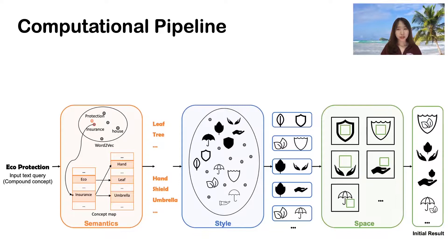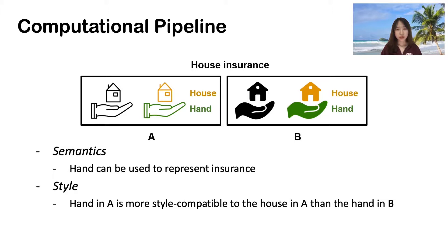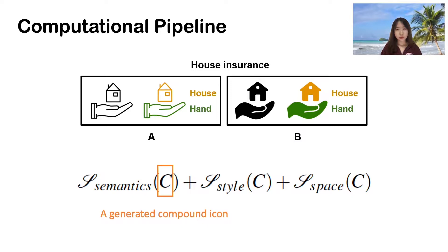To learn to combine constituent icons in compatible ways, we turn to examples of existing compound icons for help. For example, from these two icons, the model can learn: hand can be used to represent insurance for semantics, hand in A is more style compatible to the house in A than hand in B for style, hand is often put below other objects to indicate protection and insurance for space.